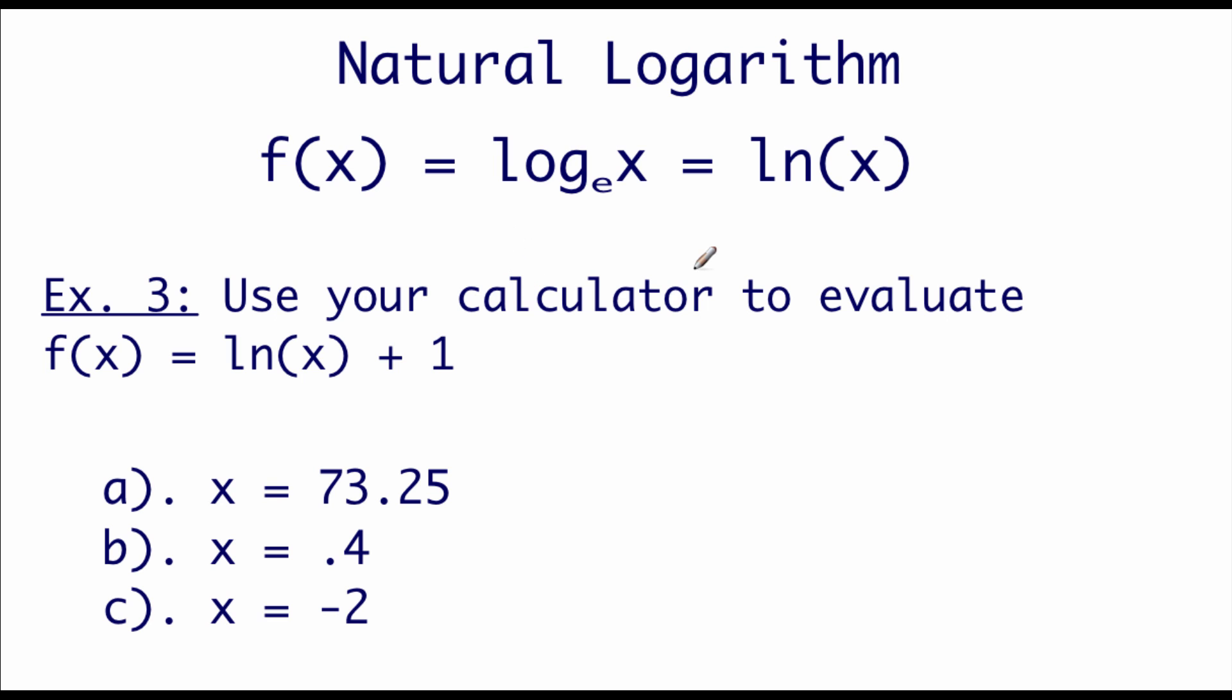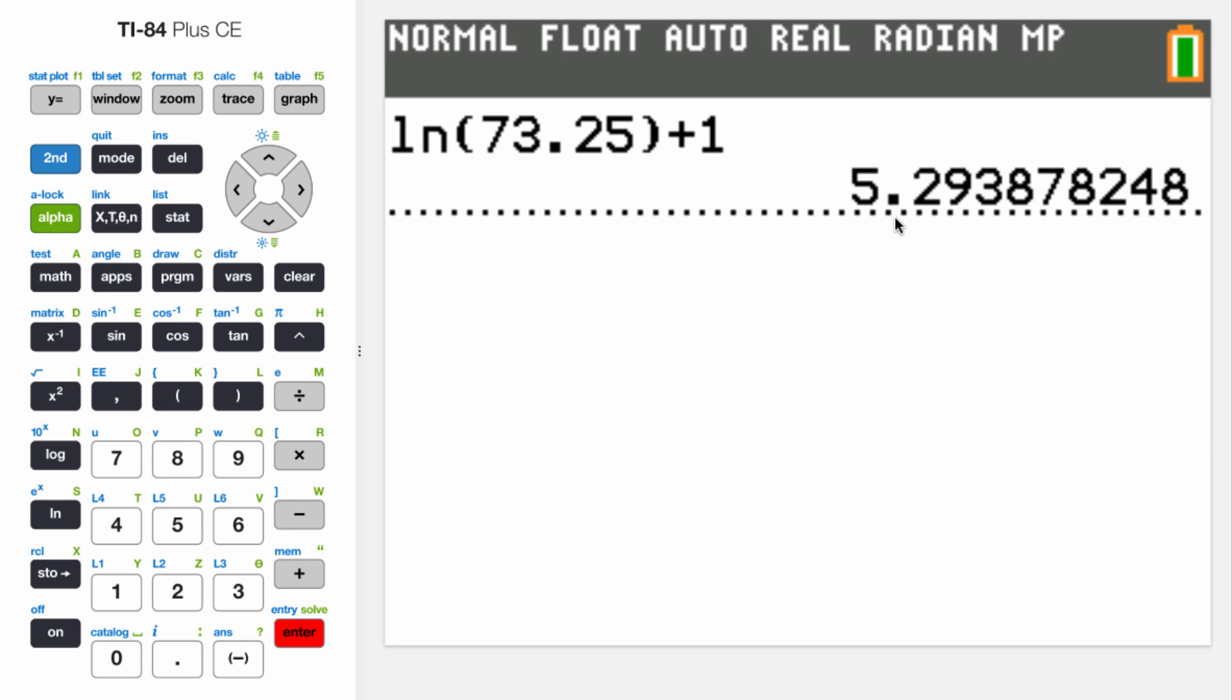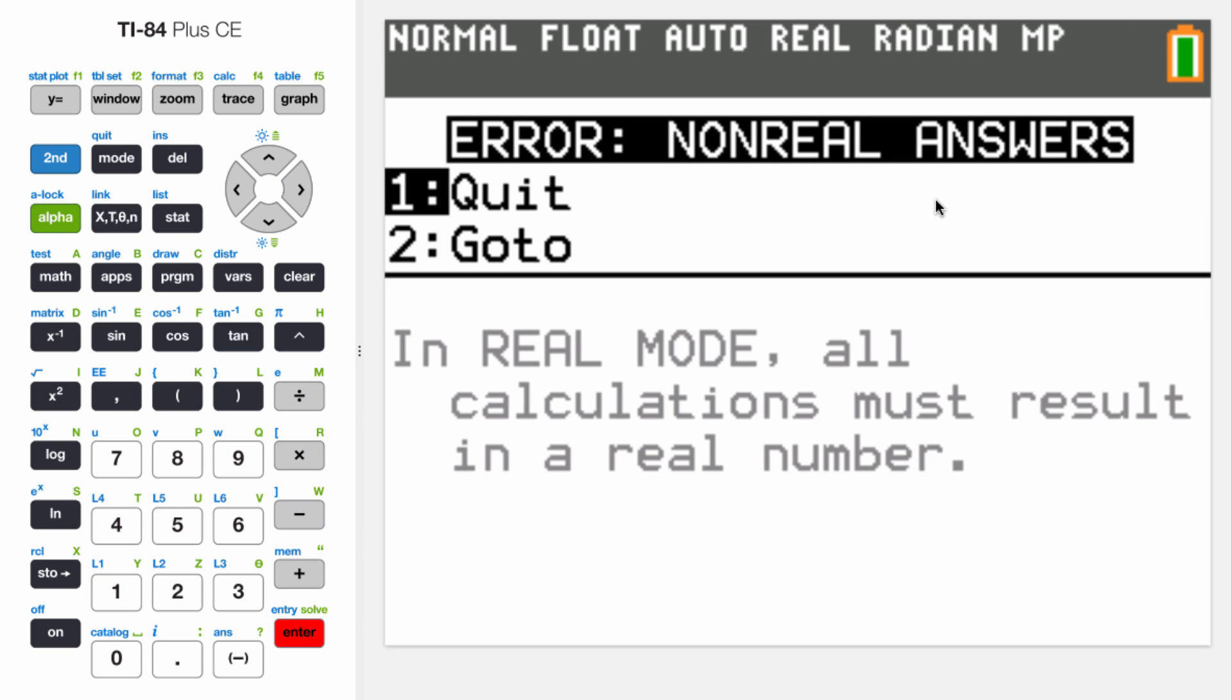So we're going to use our calculator to evaluate a couple of natural log equations. We've got f of x equals the natural log of x plus 1, and we're going to plug in three different x values. Here's my calculator. If you look along the left-hand side, there's that ln button. First thing I'm going to plug in was 73.25, and then we've got the plus 1 on the end. So we should get 5.294 if we round that off. Plugging in our next x value, it's 0.4, and then we're going to add 1 on the end. So we get 0.084 if we round that one off. And our last x value was negative 2 plus 1 on the end, and we get a non-real answer.